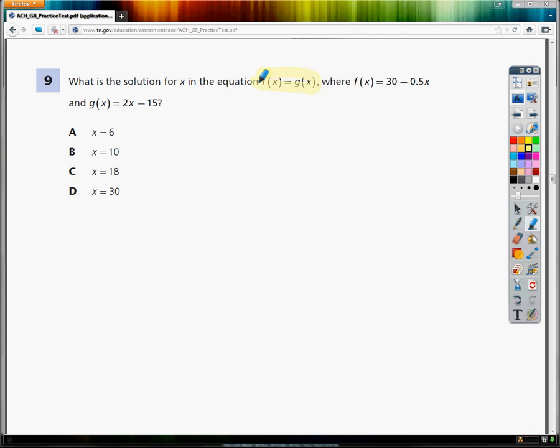f(x) is equal to g(x). That's important. It means the one thing they give me is equal to the other. They say where f(x) is equal to 30 minus 0.5x and g(x) is equal to 2x minus 15. Well, if I know they're equal to each other, wouldn't it make a lot of sense if I just set them equal to each other?